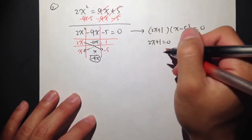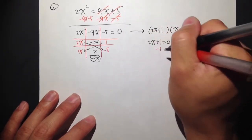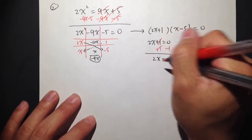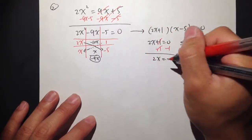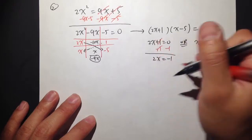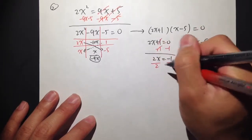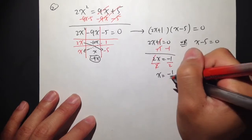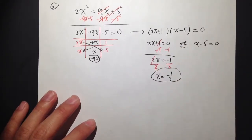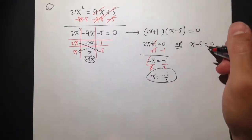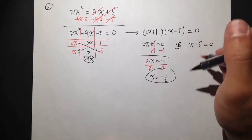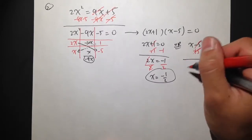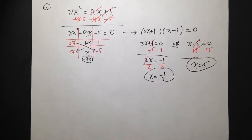To solve the first: subtract 1 on both sides, and I get 2x is equal to negative 1. Now I divide both sides by 2, and I end up with x is equal to negative one-half. First answer. For the second answer, I just add 5 on both sides — done — x is equal to 5. Second answer.